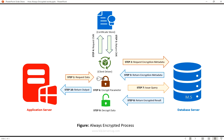In step five, return column master key, the .NET client driver acquires the column master key. Following that, in step six, encrypt parameters — parameters directed at encrypted columns must undergo encryption. To achieve this, the column encryption key retrieved from SQL Server for a specific column is decrypted using the corresponding column master key. Subsequently, the parameter value is encrypted using the underlying key value.